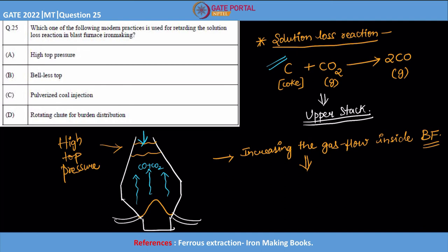Therefore, one of the most modern practices people are doing in order to control this is high top pressure. So the answer is option A. High top pressure will help you to reduce the solution loss reaction. Of course, others are also modern practices, but they have their own functions.